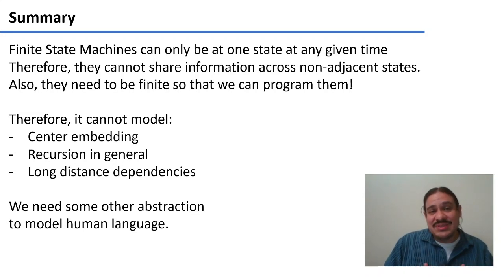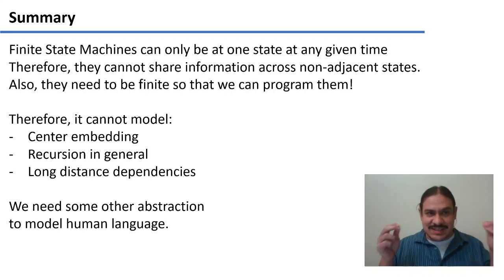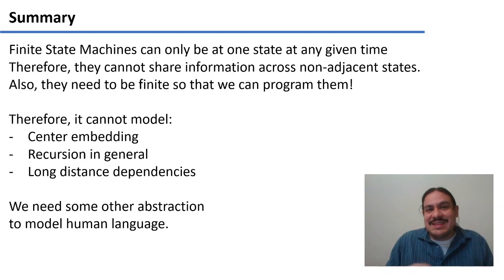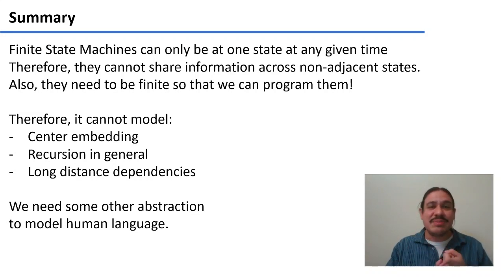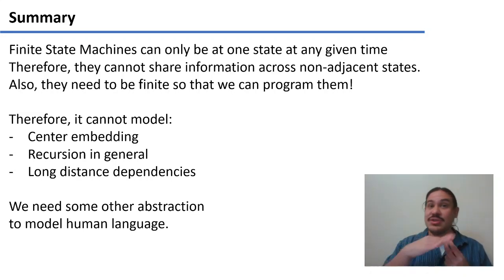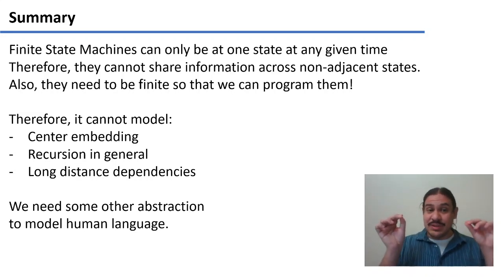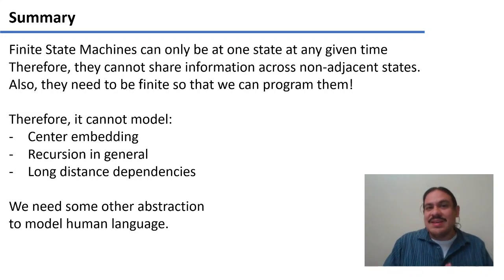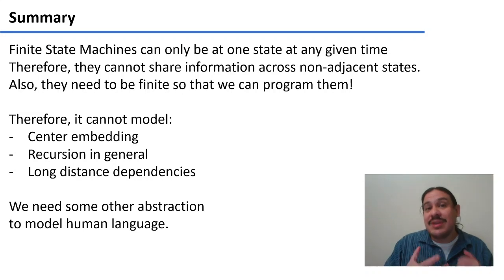In summary, there are several issues. Finite state machines can only be in one state at any given time, and they cannot share information across non-adjacent states. Also, the finite state machine needs to be finite — there needs to be a finite number of states so that we can program and build it. Because of these restrictions, finite state machines cannot model center embedding, recursion in general (because it could be infinite, or at minimum an unmanageable number of states), and cannot model long-distance dependencies because this would need many states communicating with each other simultaneously. So we need some other kind of abstraction to model human language. In the next video, we're going to talk about the Chomsky hierarchy, which describes other potential formalizations that could help us model language.